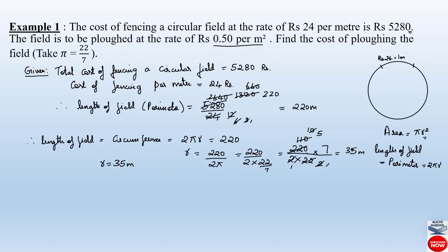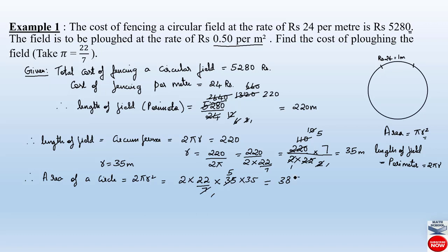Using this radius we will now calculate the area of this circular field. Area of a circle is given by πr². That is (22/7) × 35 × 35. Cancelling 7 into 35 gives 5, so we get 22 × 5 × 35 = 44 × 5 × 35 — wait, 2 × 22 = 44, then 44 × 5 × 35 = 3,850 meter square. Area is always in terms of meter square.